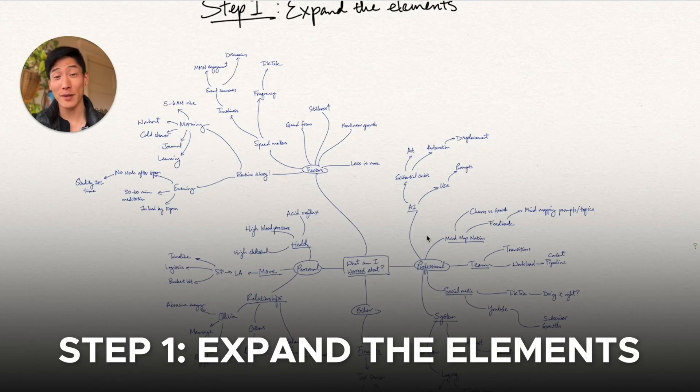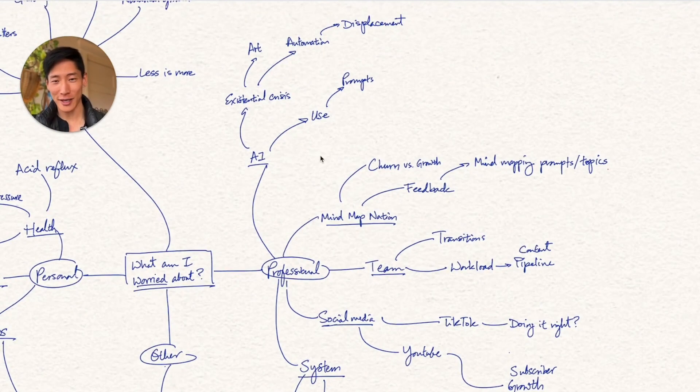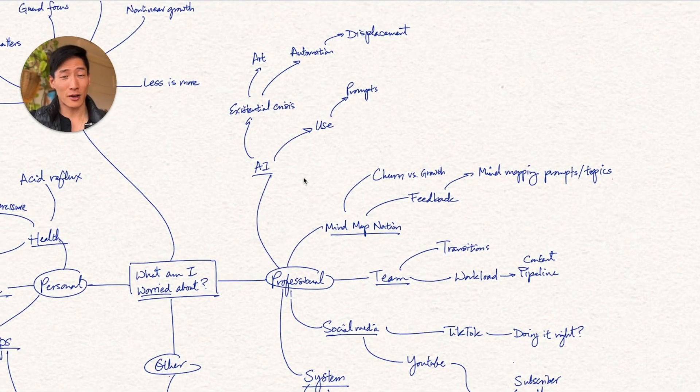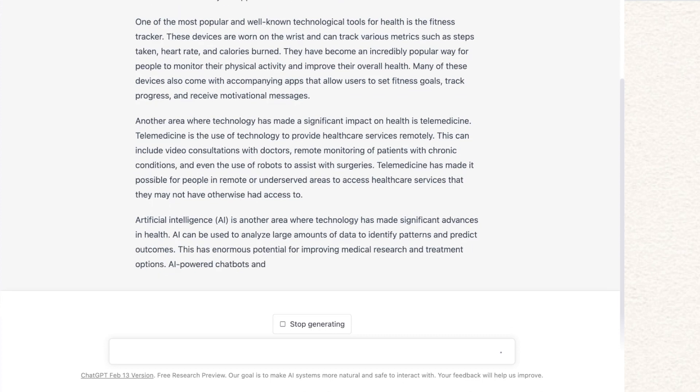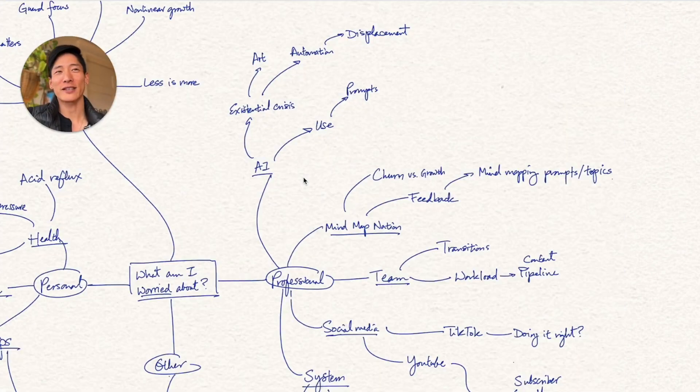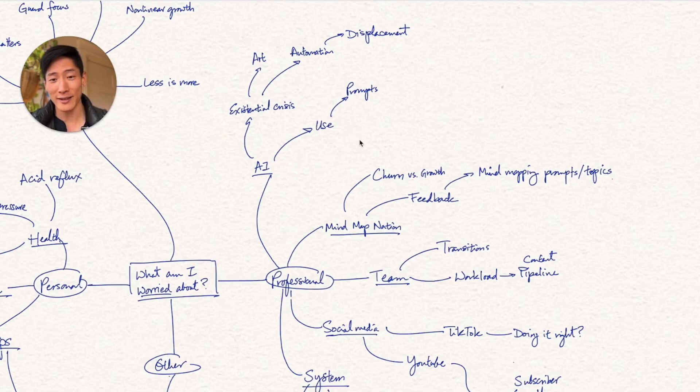Let's start with step number one, expanding the elements. So here under professional, I've got AI. So the recent developments in AI actually really made me take pause because I'm a content creator. I write newsletters, I make videos. And now ChatGPT can essentially write like a pretty decent blog in five seconds. So when that first came out, I feel inherently threatened. So I was going like, am I going to get displaced? And there was a lot of angst that was attached to it. Not only that, if I'm going to learn how to use these things, I have to put in the effort to climb that learning curve.